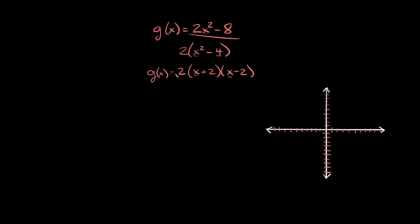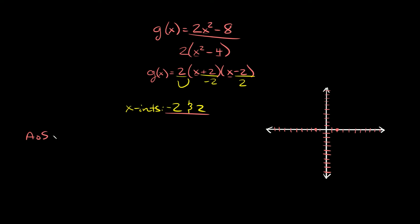So g of x equals 2 times x plus 2 times x minus 2 — now it's in intercept form. Since a is positive 2, the parabola opens up. Our x-intercepts: we have a positive 2 and a negative 2, so taking the opposite signs gives x-intercepts at negative 2 and positive 2. For the axis of symmetry: negative 2 plus 2 divided by 2 equals 0 divided by 2, which equals 0. So the axis of symmetry is at x equals 0.